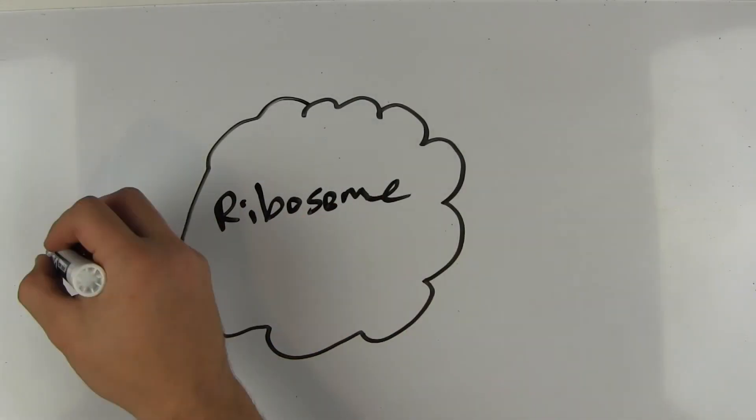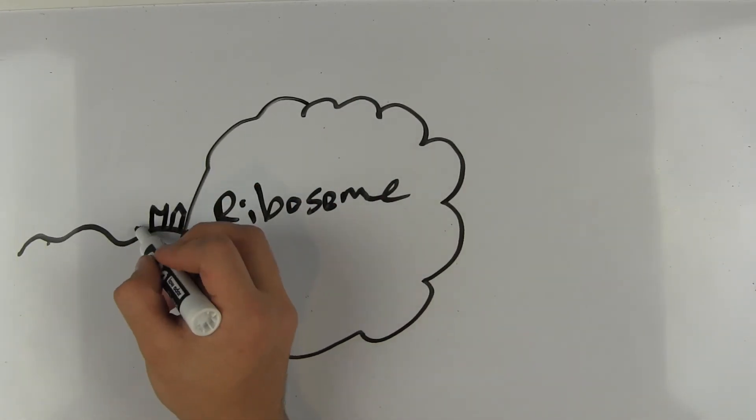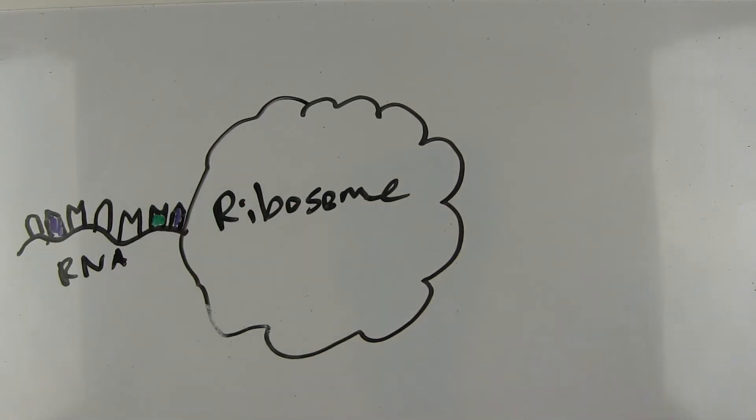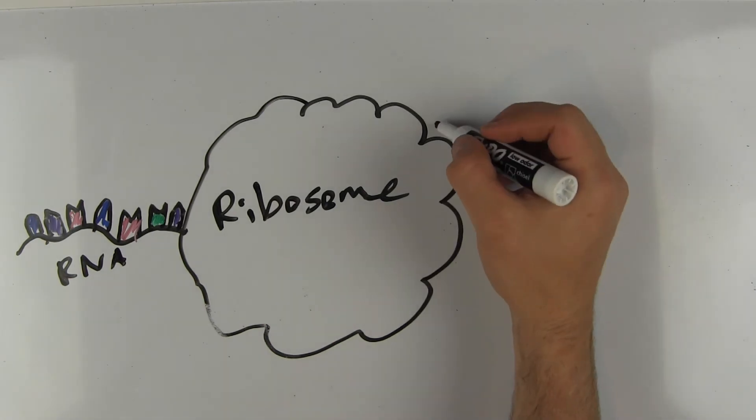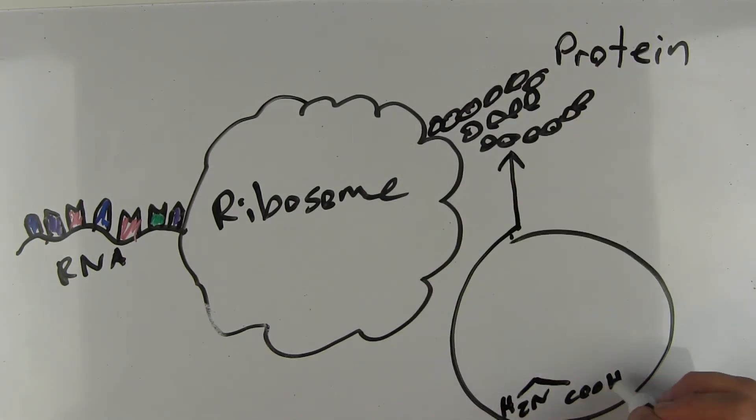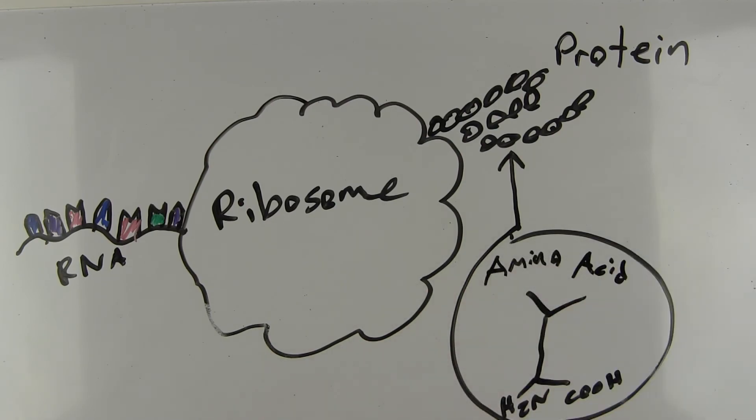The RNA then goes into a ribosome, and the ribosome, using a three-letter combination on the RNA, codes for one amino acid. The amino acids created by the ribosome then all stick together in a certain way to make a protein.